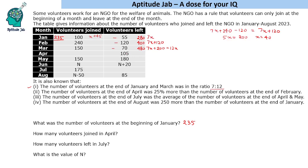For April, we are given that the number of volunteers at the end of April was 25% more than the number at the end of February. February was 400, so April should be 500. From 480 to 500 is an increase of 20, and since 105 leave, there should have been 125 volunteers joining in April to make the number 500.